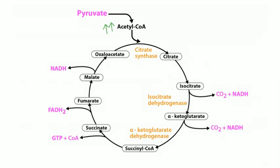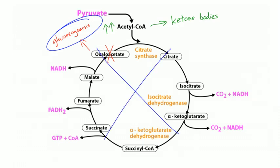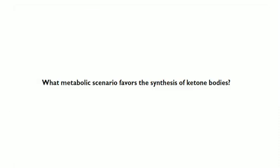When do you start generating ketone bodies? Basically whenever you break down so many fatty acids and make so much acetyl-CoA that the TCA cycle can't handle it all. In prolonged starvation or a very low carb diet, you use up all your oxaloacetate because of gluconeogenesis. As you deplete oxaloacetate, the TCA cycle has to slow down — you're redirecting TCA cycle metabolites toward gluconeogenesis, which shuts down the TCA cycle and starts ketone body production.